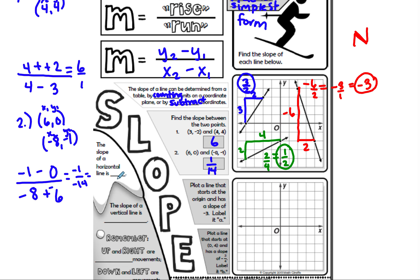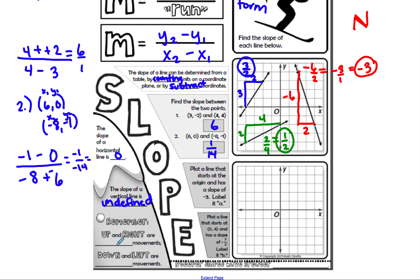The slope of a horizontal line is zero — flat like the floor. The slope of a vertical line is undefined — that's going straight up and down. Remember: up and right are positive movements; down and left are negative movements.